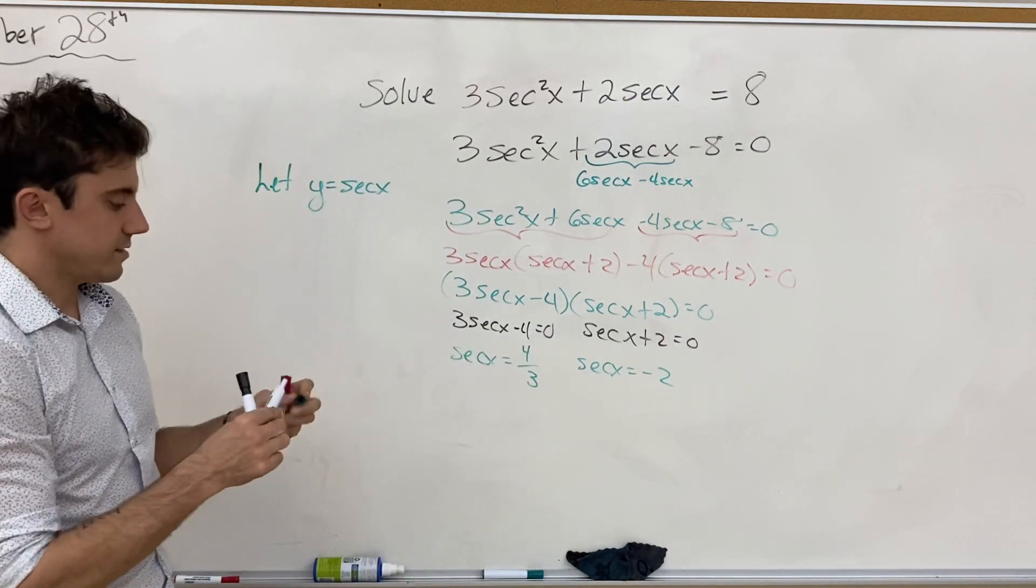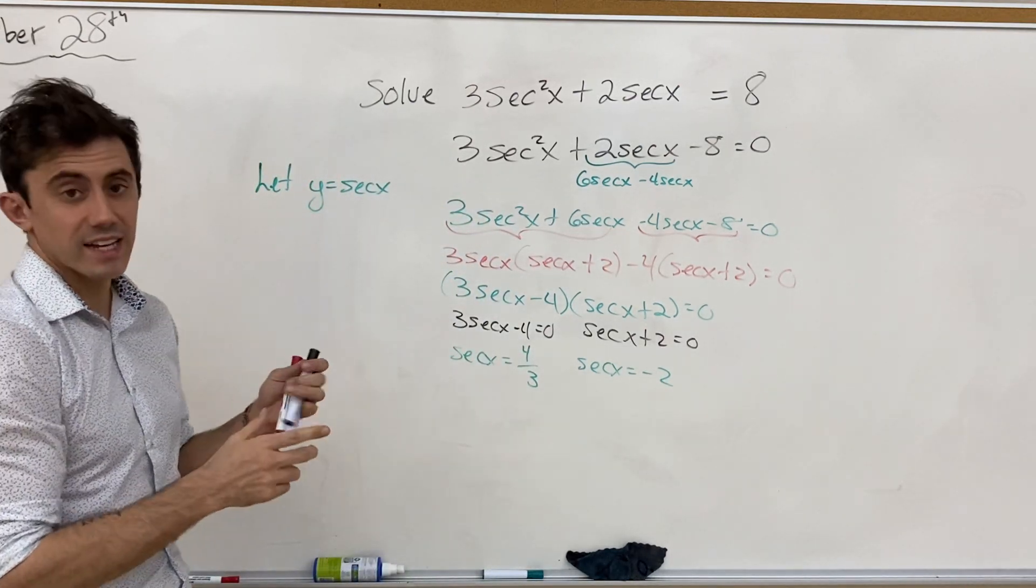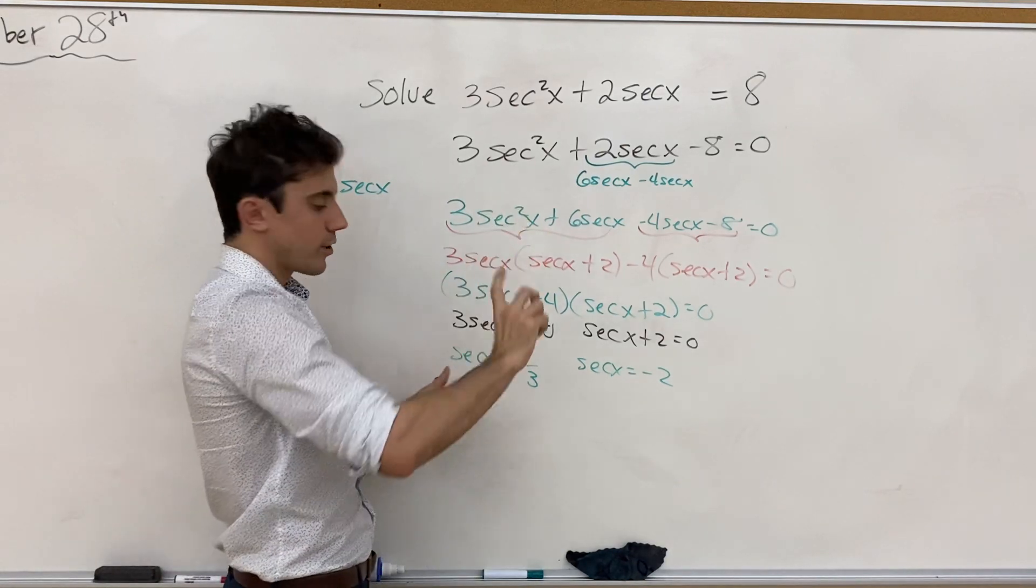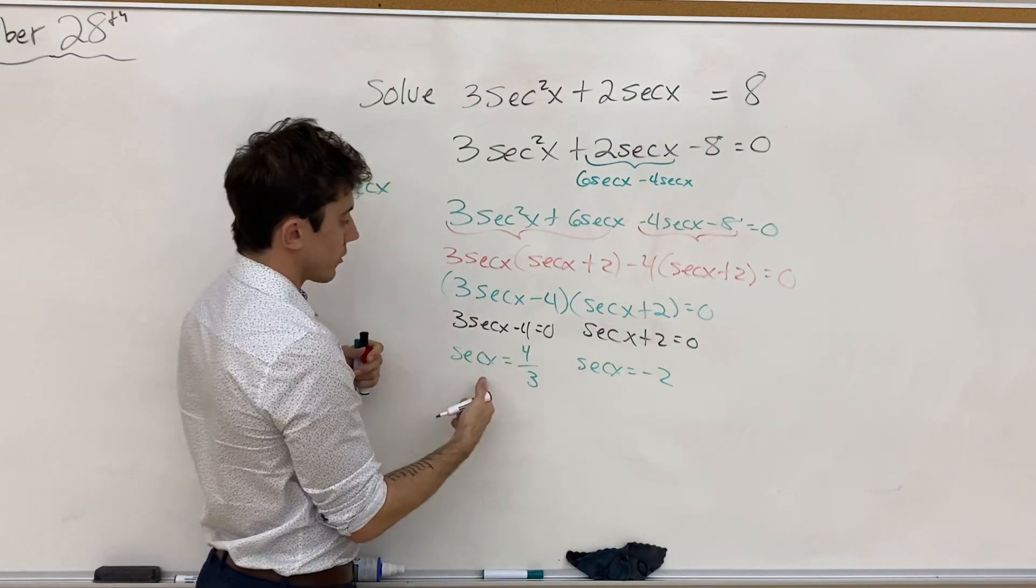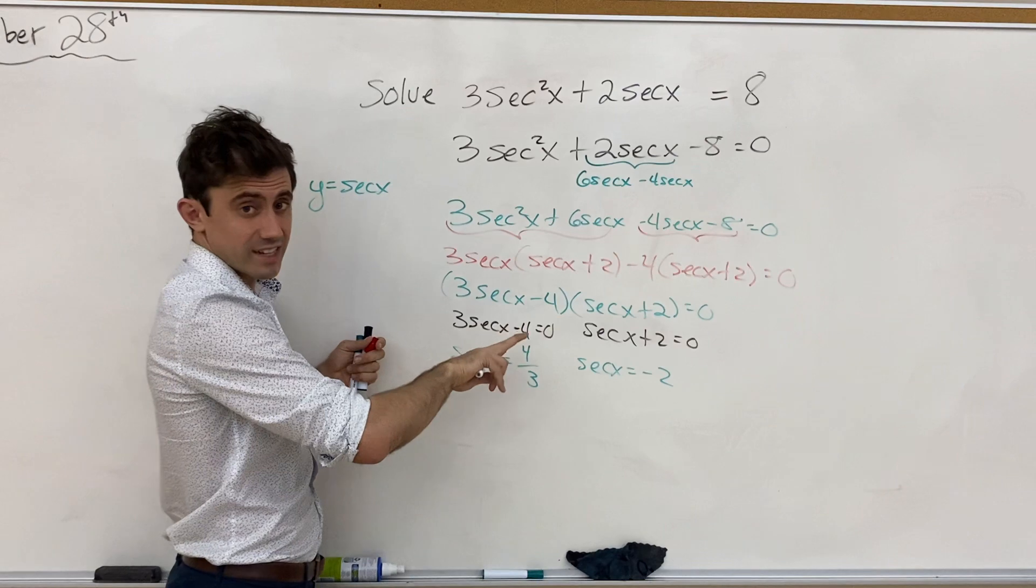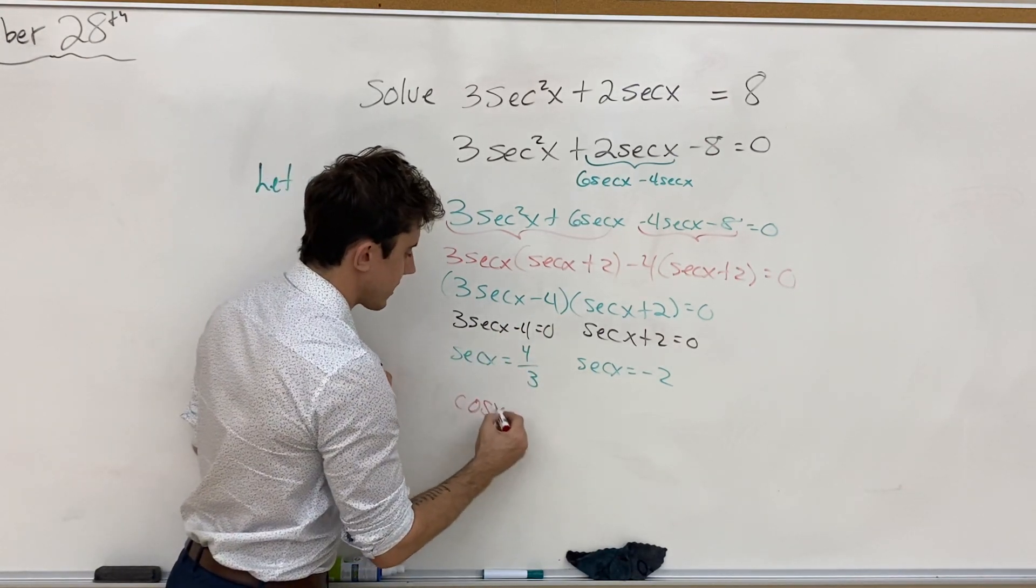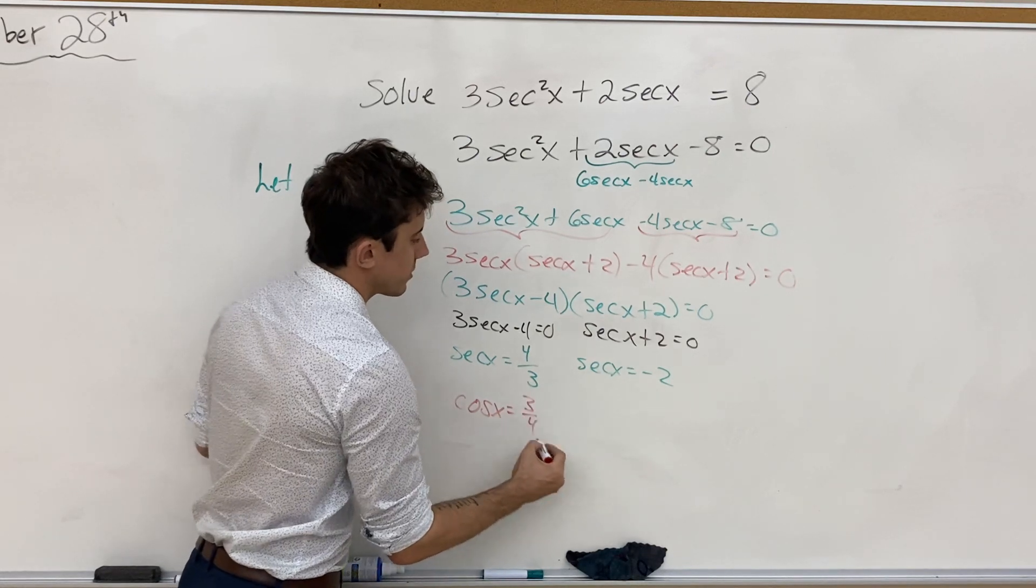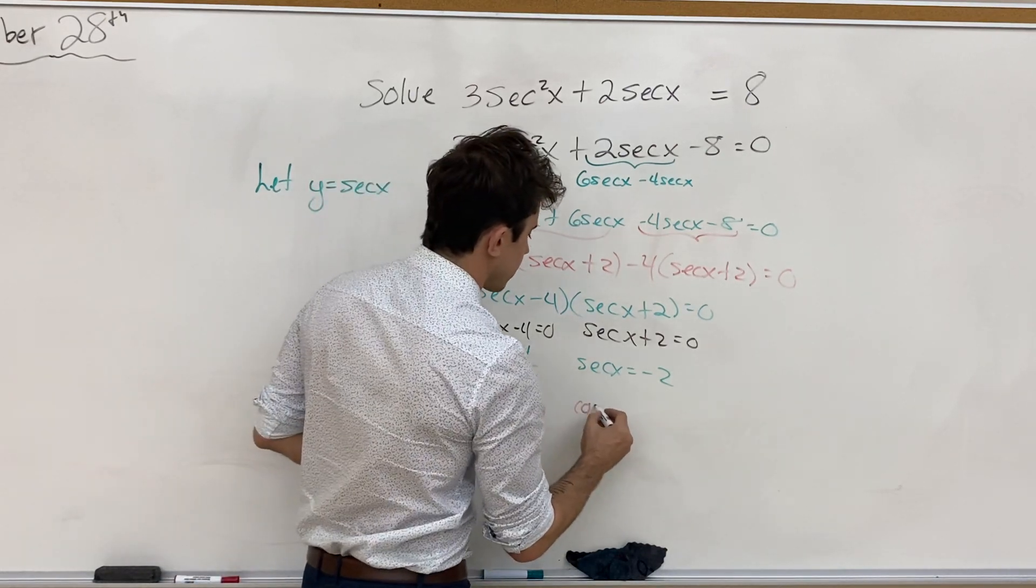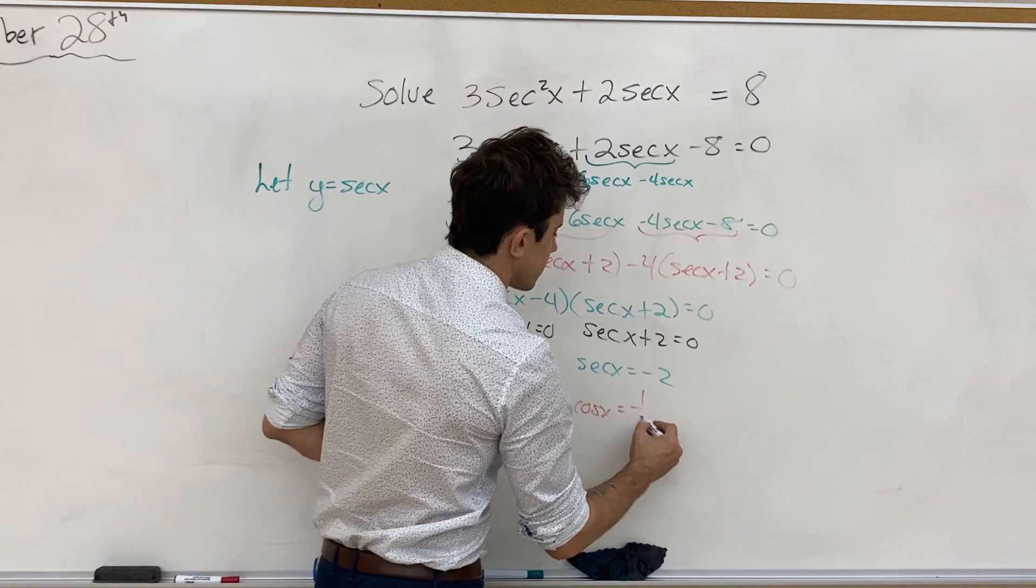And lastly, we remind ourselves that secant x is fundamentally 1 over cos x. And so if we take the reciprocal of both sides, we get that cos x must be equal to 3 quarters, or that cos x has to be equal to negative 1 half.